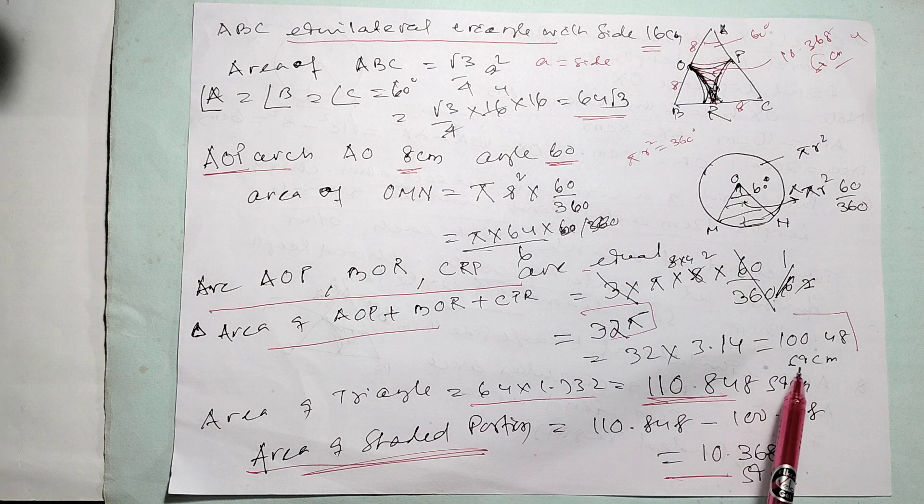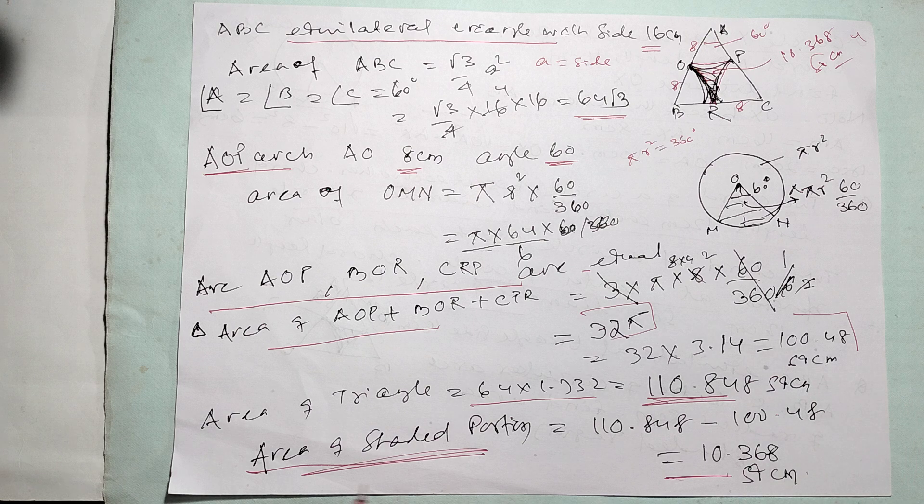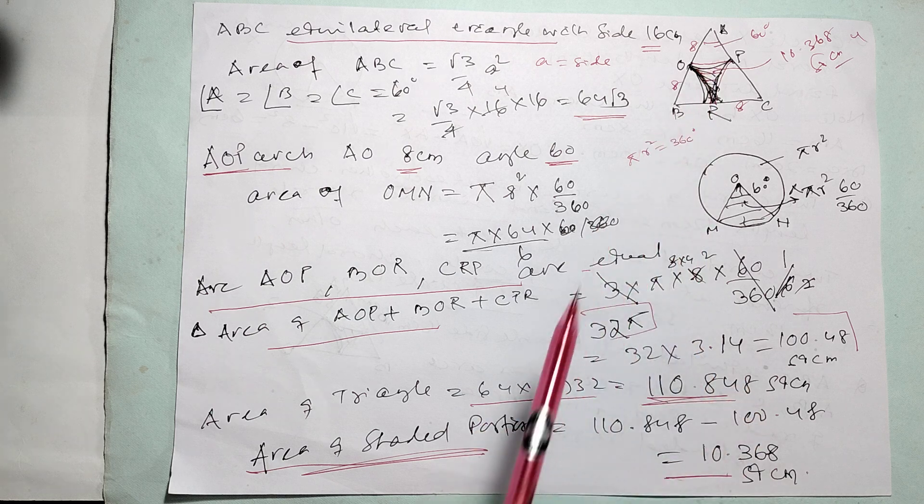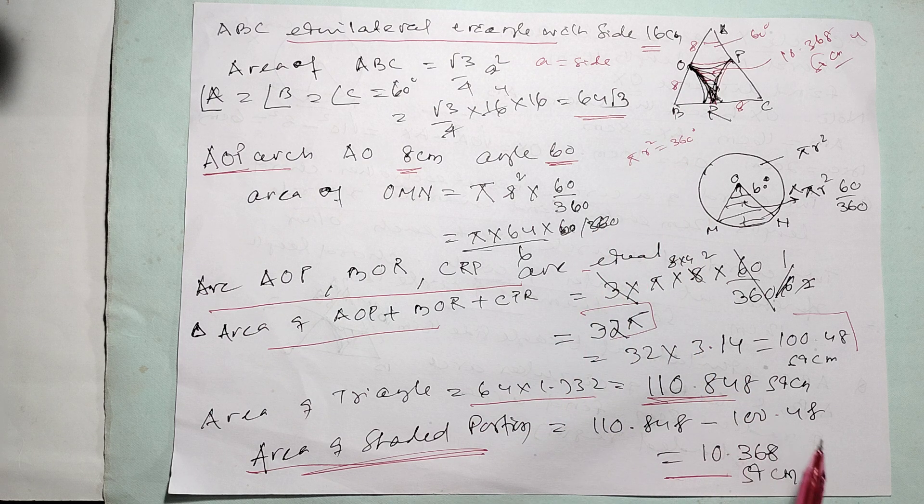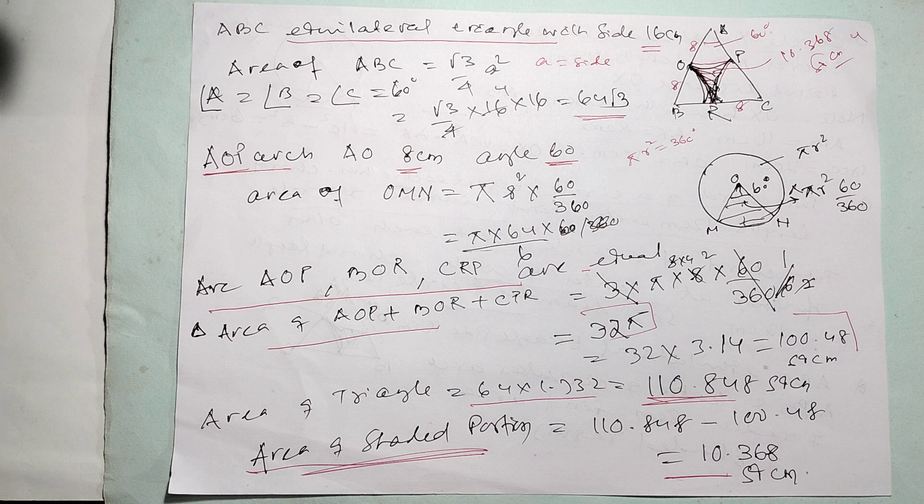So, it is coming 32 point, that is 100.48 square centimeter. Area of triangle, 110.848. So, this shaded portion is area of triangle minus area of the arc. That is 10.368 square centimeter.